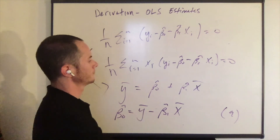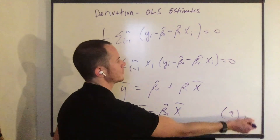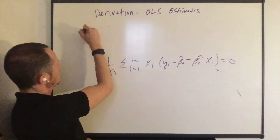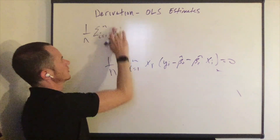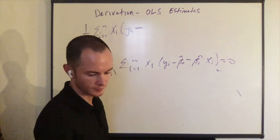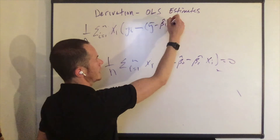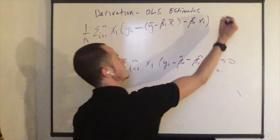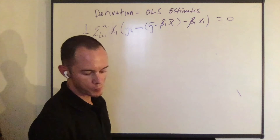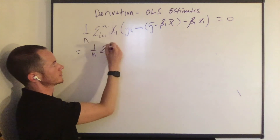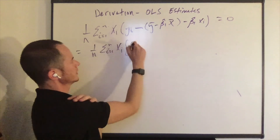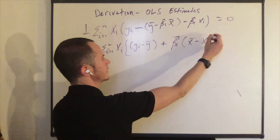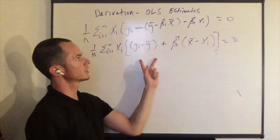Now we can take equation nine and plug it back into the second sample counterpart equation. So we have one over n times the sum from i equals one to n of x_i times y_i minus, in parentheses, y bar minus beta one hat times x bar, minus beta one hat times x_i, equals zero. Now let's rearrange this. This is equal to one over n times the sum from i equals one to n of x_i times, in brackets, y_i minus y bar plus beta one hat times x bar minus x_i, close bracket, equals zero. I just collected terms.